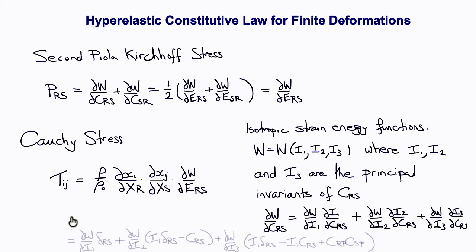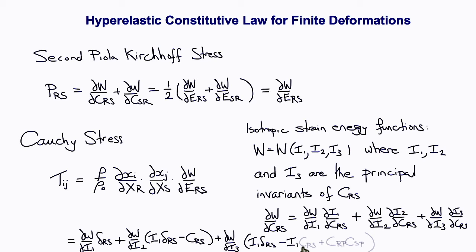If W is given as a function of I1, I2, and I3, then del W / del I1, del W / del I2, and del W / del I3 can be obtained by differentiating that function — these are called the response terms. The additional terms, since I1 is the trace of C, I2 is a function of the trace of C and the trace of C squared, and I3 is the determinant of C, can be computed. Without deriving it here, the result is: del W / del I1 times delta_RS, plus del W / del I2 times (I1 delta_RS minus C_RS), plus del W / del I3 times (I1 delta_RS minus I1 C_RS plus C_RP C_SP). This expression allows computation of the Piola-Kirchhoff stress components from the strain energy written as a function of I1, I2, and I3.